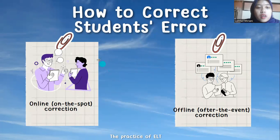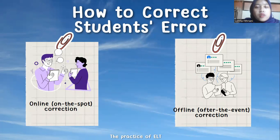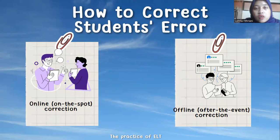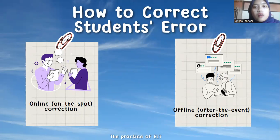On-the-spot correction is a technique in which the teacher encourages the student to correct their mistake by themselves. Once the student makes an error or mistake, the teacher will give the student a clue. If it doesn't work, the teacher can provide information. For example, if the student says 'my dad got to work yesterday,' the teacher will say 'oh, so your dad went to work yesterday.' That's called on-the-spot correction.